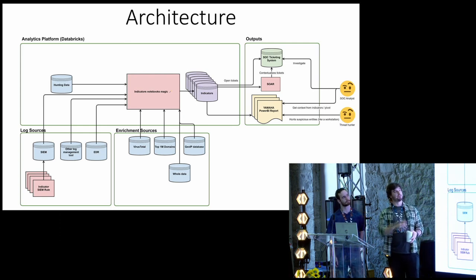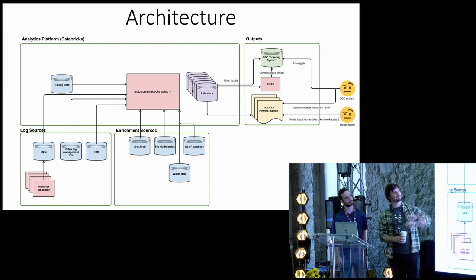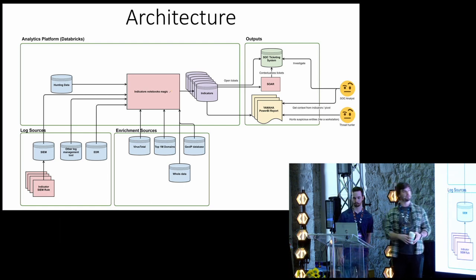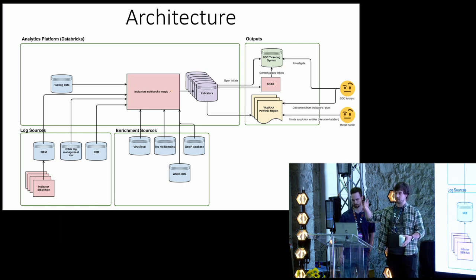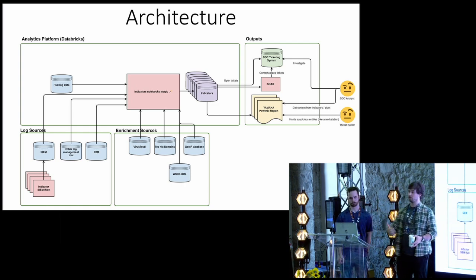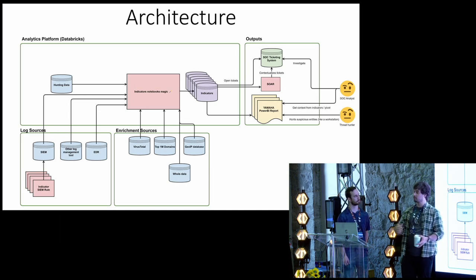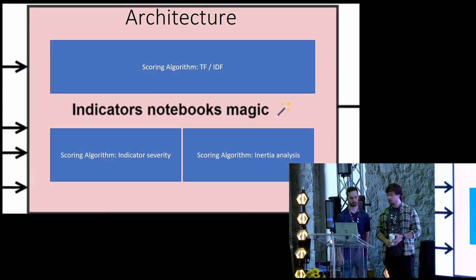And then all of this goes into the notebook magic, where the scoring and the indicator logic happens. And we output this in a data store. And from there, we have three type of outputs. We can open directly a ticket into the ticketing system to get an investigation. The SOAR can pull the data and contextualize investigation automatically. Or there is the Power BI for manual user queries that want to explore the data.